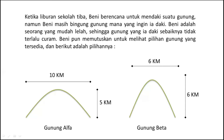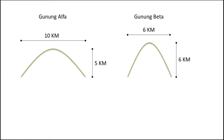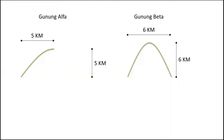Untuk menghindari ilusi optik itu, kita harus benar-benar mengetahui berapa kemiringan gunung alfa dan berapa kemiringan gunung beta. Kita coba lihat untuk masing-masing gunung. Kita akan lihat seberapa kemiringannya dengan menggunakan rumus matematika. Untuk gunung alfa, panjangnya 10 km, berarti setengahnya adalah 5 km, dan tingginya tetap sama 5 km. Untuk menghitung kemiringan dari gunung alfa, rumus menghitung kemiringan adalah tinggi dibagi jarak.